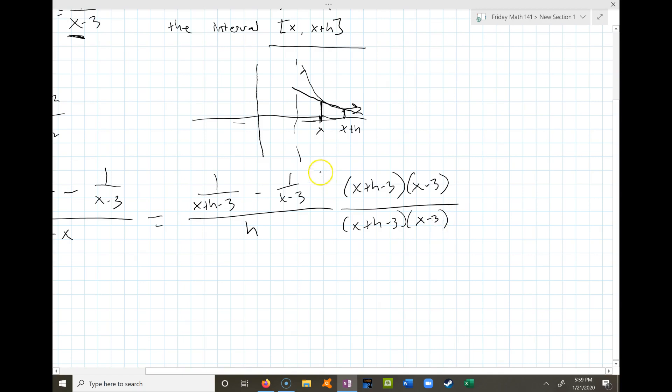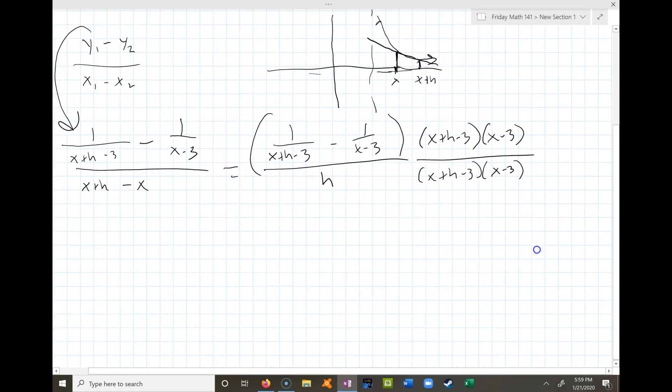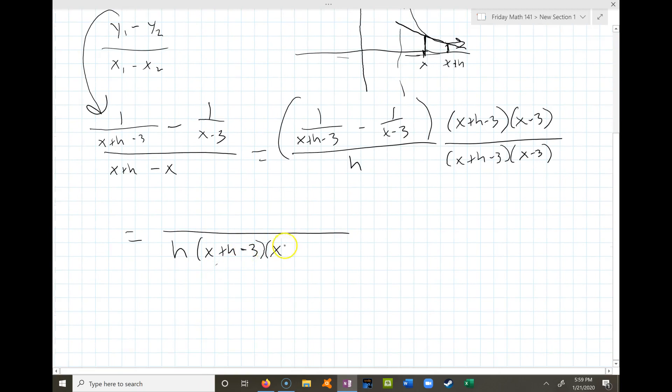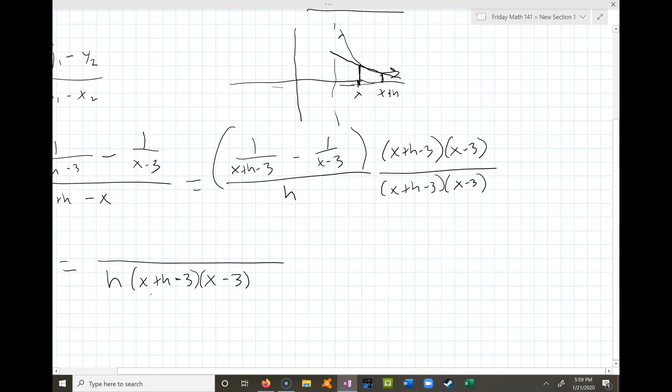I'm going to multiply top and bottom by both of those. Now remember, when I say multiply the top, that means I'm multiplying both of these by that. On the bottom, I'm going to have h times x plus h minus three times x minus three. Now on the top, I'm going to multiply this, so we're distributing this through. I'm multiplying this whole thing by that, and the x plus h minus three will cancel out, leaving just x minus three. So that would be what I get here.